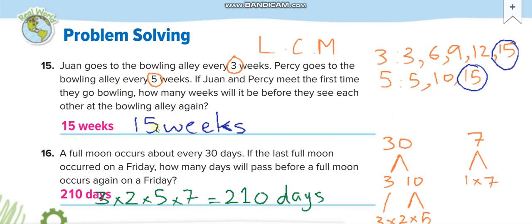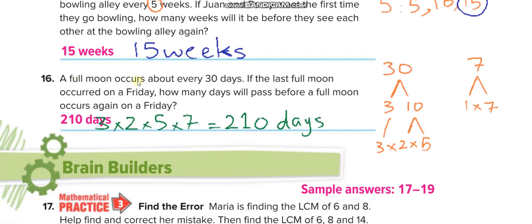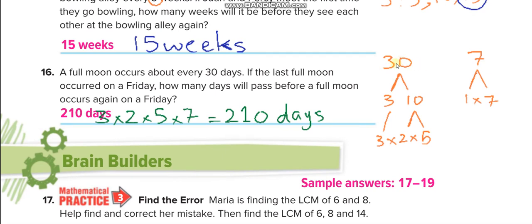Another real-world problem: a full moon occurs about every 30 days. If the last full moon was on a Friday, how many days will pass before a full moon occurs on a Friday again? From Friday to Friday is 7 days. Find the LCM of 30 and 7 using prime factorization: 3 × 2 × 5 and 1 × 7 — nothing in common, so multiply all to get 210 days.